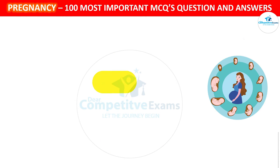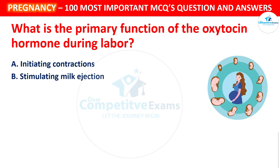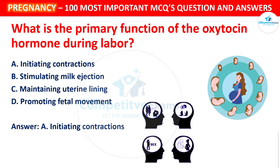Next question: What is the primary function of the hormone oxytocin during labor? Your options: Initiating contractions, Stimulating milk ejection, Maintaining uterine lining, or Promoting fetal movement. The correct answer is Initiating contractions. Oxytocin plays a key role in initiating uterine contractions during labor, facilitating the birthing process.